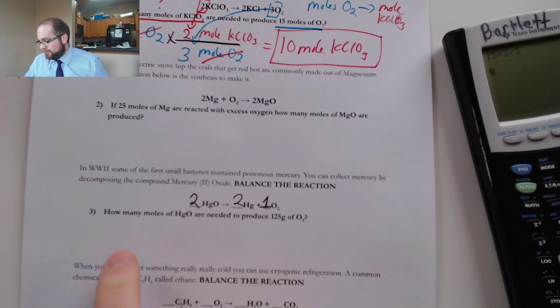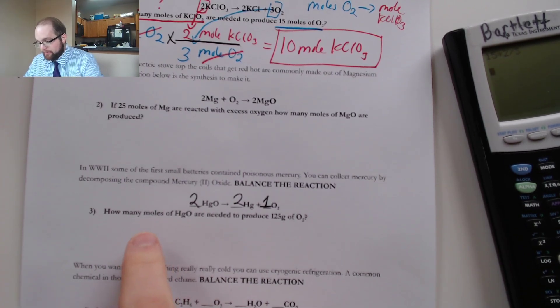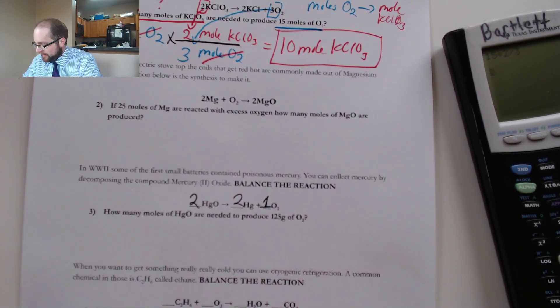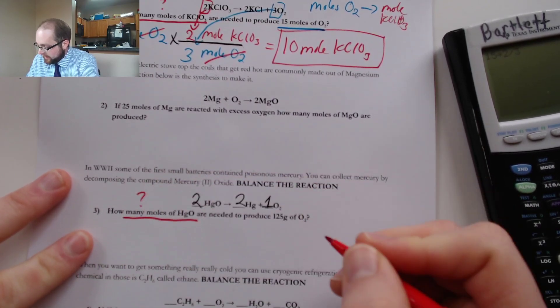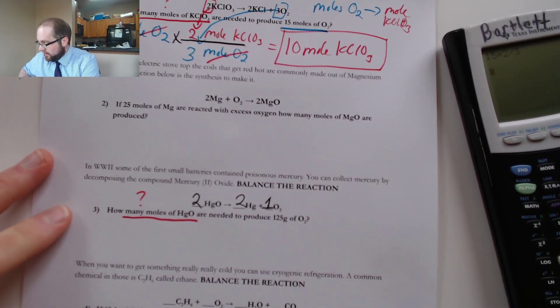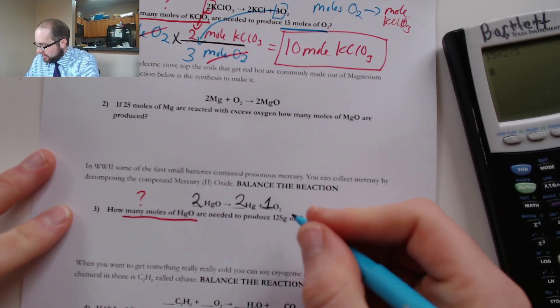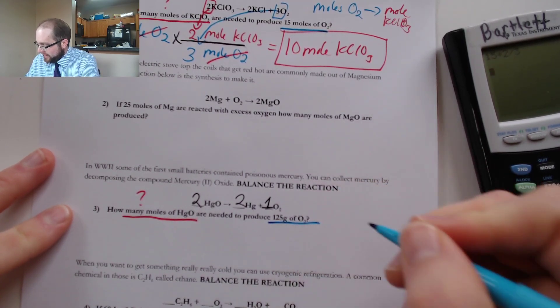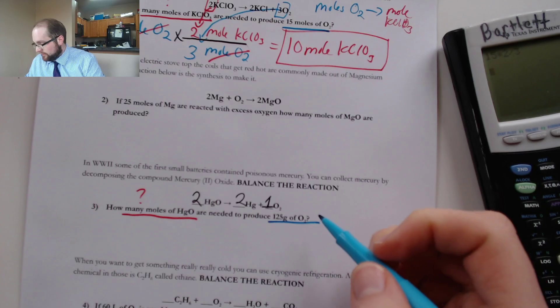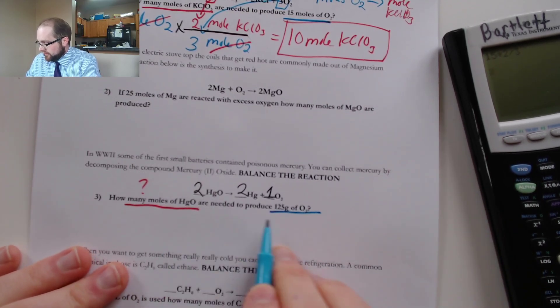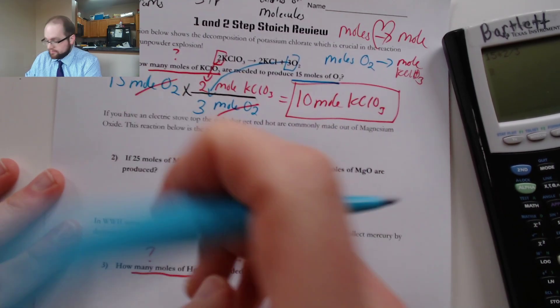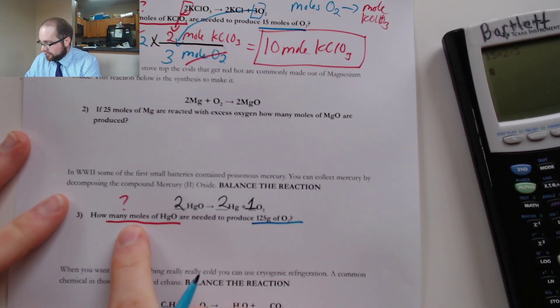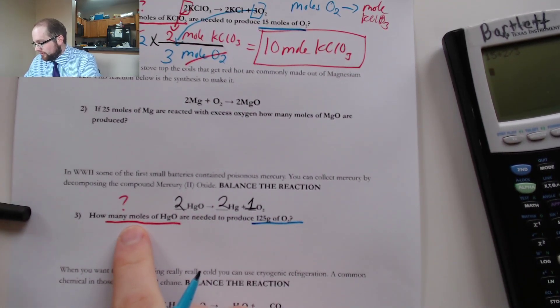So we now have a balanced equation and we can proceed with our problem. This problem is asking us how many moles of HgO are produced when we have 125 grams of O2. So notice here this is a bit different. Up here we went moles to moles. Now we're going to need to do grams to moles.